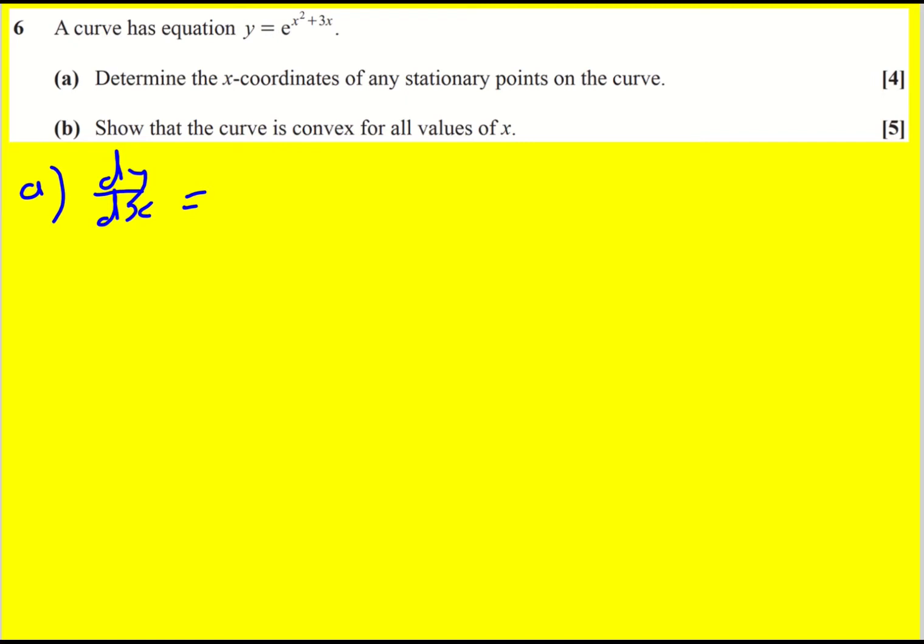It's the chain rule, and there's a quick way to do it. We've got a function of a function. The outside is e to the something, and the inside is x squared plus 3x. We can differentiate the outside, keeping the inside the same. That gives us e to the x squared plus 3x.